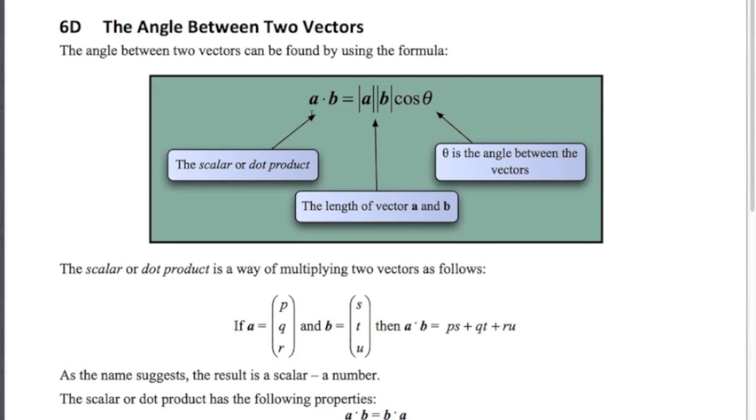So on the left hand side here, we've got something called the dot product or the scalar product, A dot B. So we've got bold here, so these are vectors. On the right hand side, we've got the length of A and the length of B. Those straight lines mean length and cos of the angle in between the vectors. So a lot of problems will ask you to find the angle between the vectors. If we're given the two vectors, we can use this formula here to find that angle.